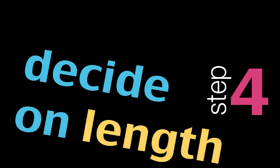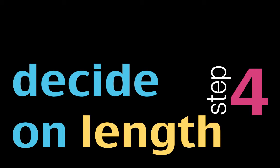Step four: decide on length. Think about how long you'll need the session to run in order for participants to meet the learning objectives. As a rule of thumb, three or four objectives works well for an hour-long class. If your brainstorming yielded heaps of ideas for a particular objective, you might need to break it down into smaller outcomes or focus the whole session on that one outcome. Be open to revising your learning objectives if the session feels too long. Try not to plan sessions that run for more than an hour — it's better to run a multi-session program where participants come back for a second class.